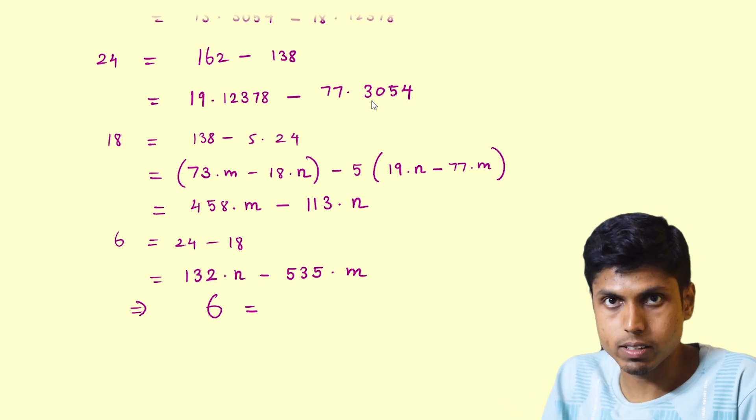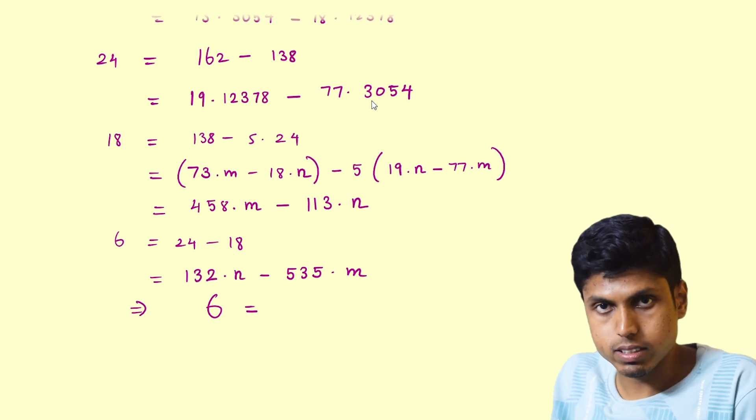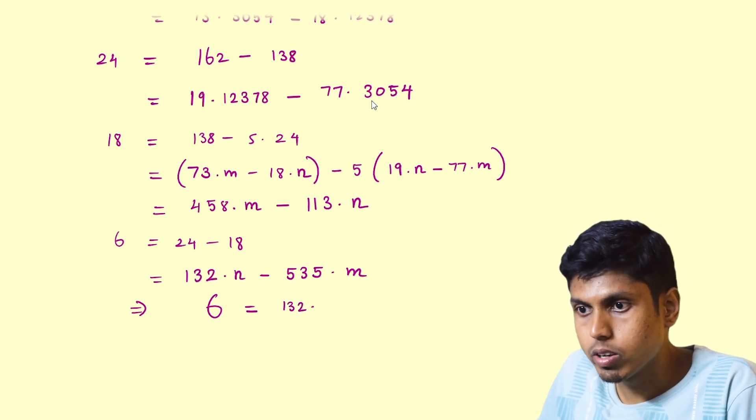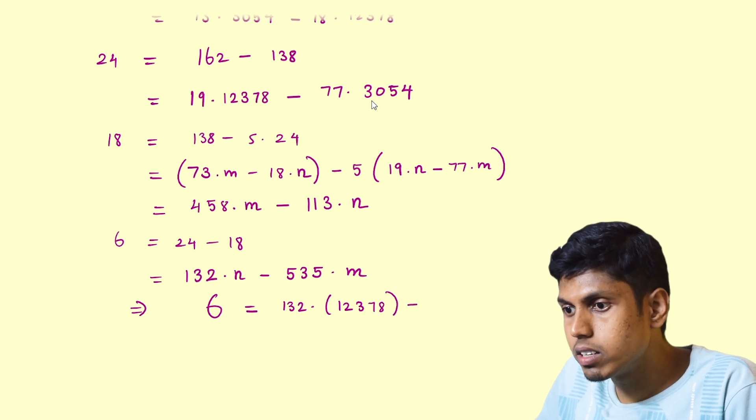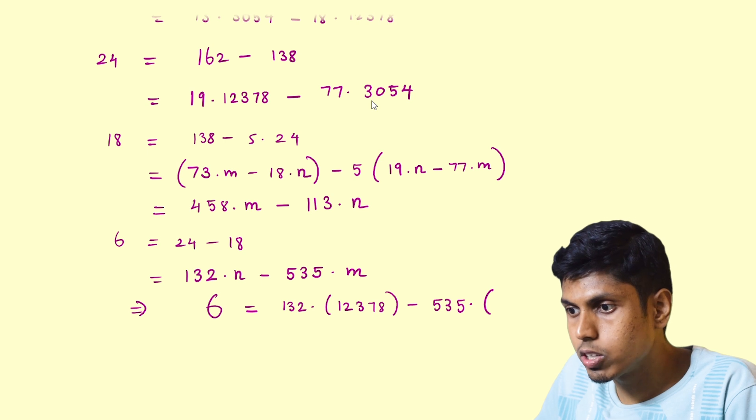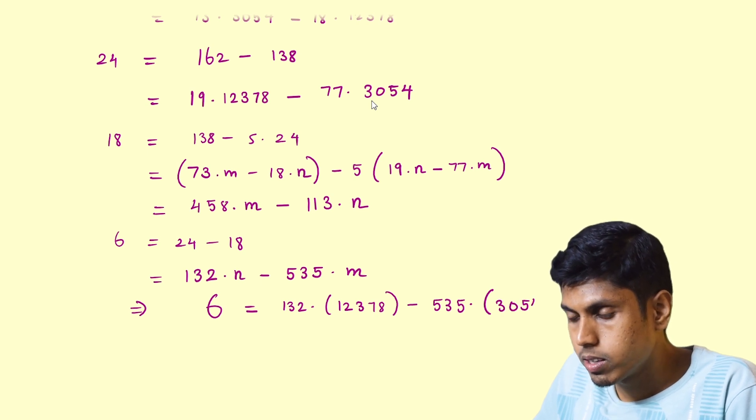So this shows us how the GCD can be written as a linear combination of those two numbers, m and n.